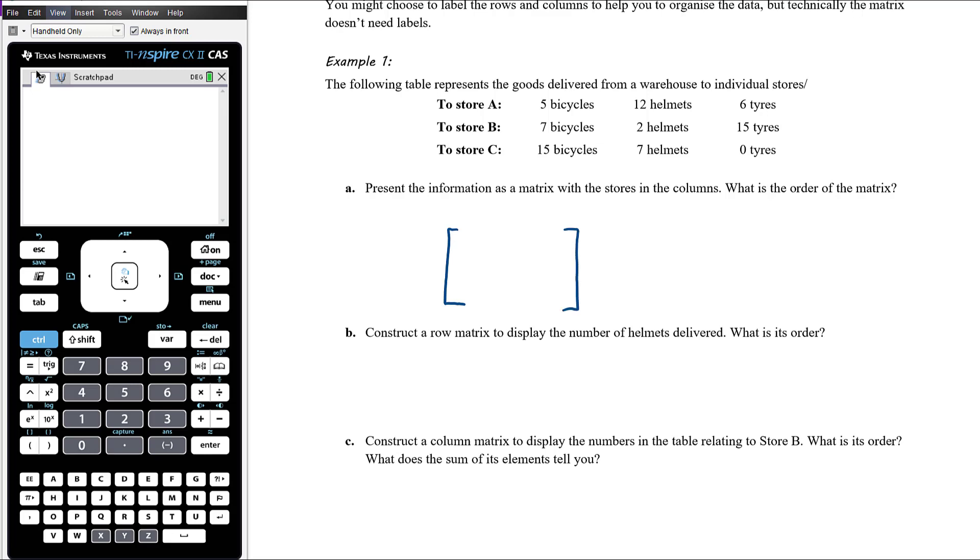So we're going to need a three by three matrix. We want the stores in the columns. So we're going to have column A, column B and column C. And we're going to have bicycles, helmets and tyres. So, store A is five, twelve and six. Store B is seven, two and fifteen. And store C is fifteen, seven and zero.